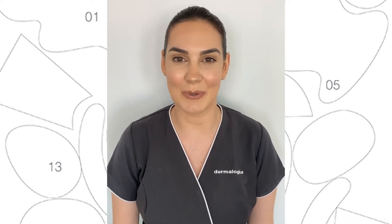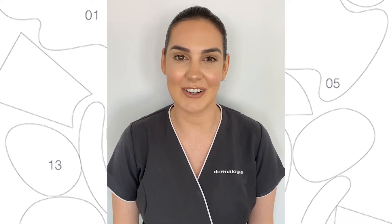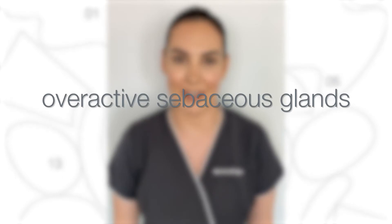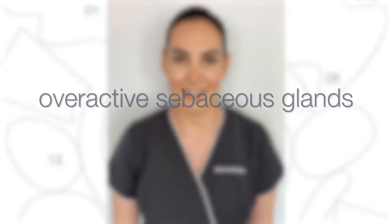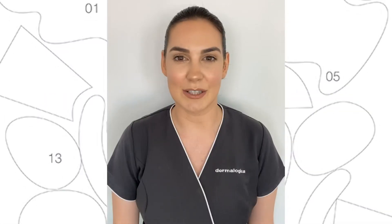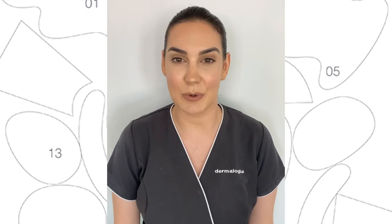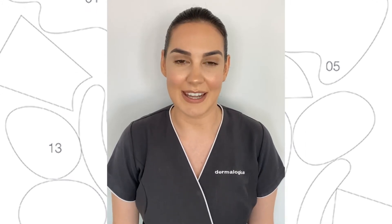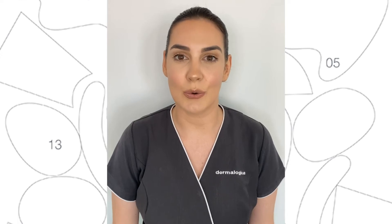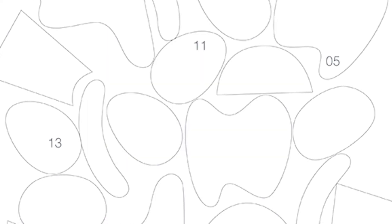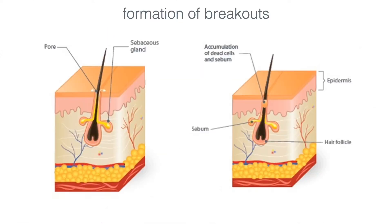Let's look at these in more detail, starting with overactive sebaceous glands. These are the glands that produce an oily substance called sebum — it's what gives you the shine. However, in adults, even if you're not oily, due to hormonal influence the sebum or oil is made thicker and stickier than normal, which contributes to clogging in our pores.